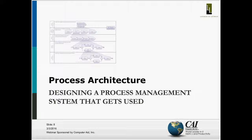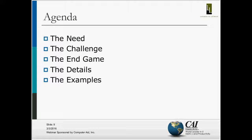Let's take a look at the agenda. I want to cover four or five areas. First, I want to talk about the need for process and the purpose, so we're all on the same page. Then I want to talk about some of the challenges of capturing how the work actually gets done. And then the end game — what the process system is there for, what its purpose is. We're going to talk a lot about end users and how the end user, during the design of your process system, is really what you need to be keeping in mind.